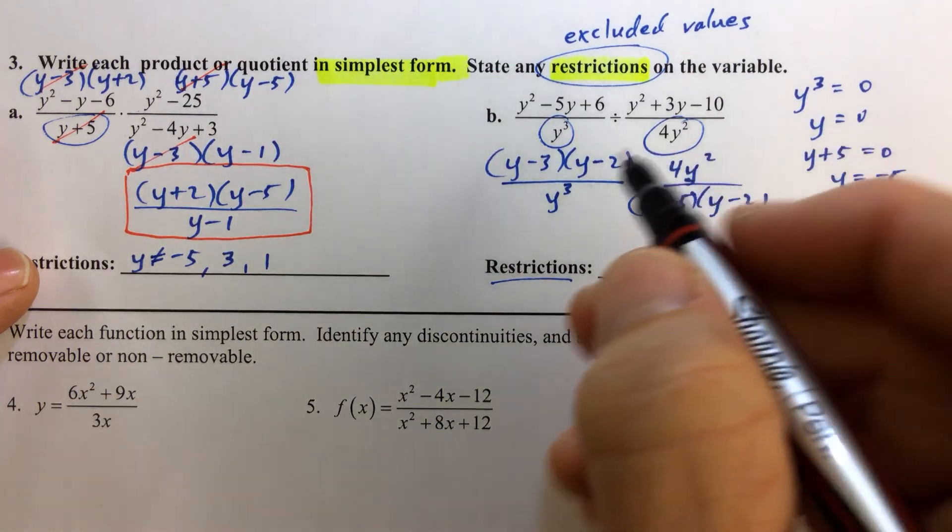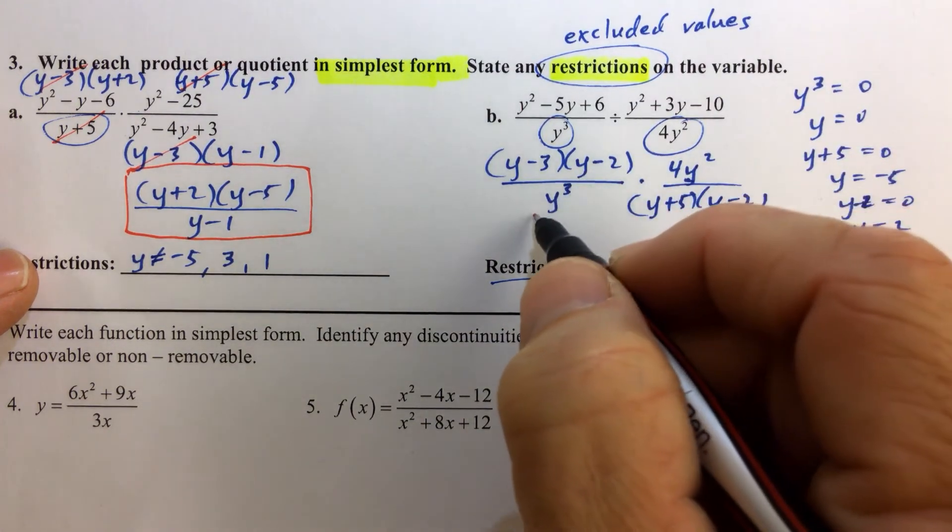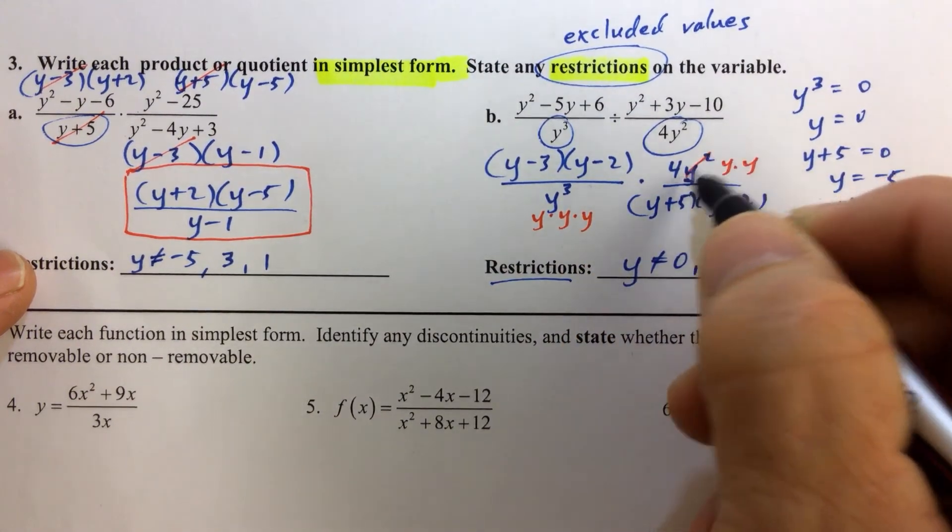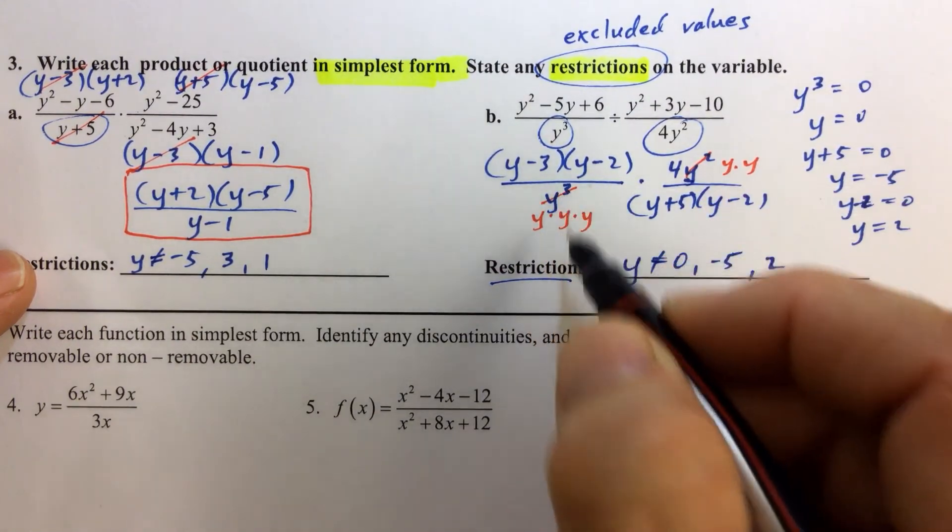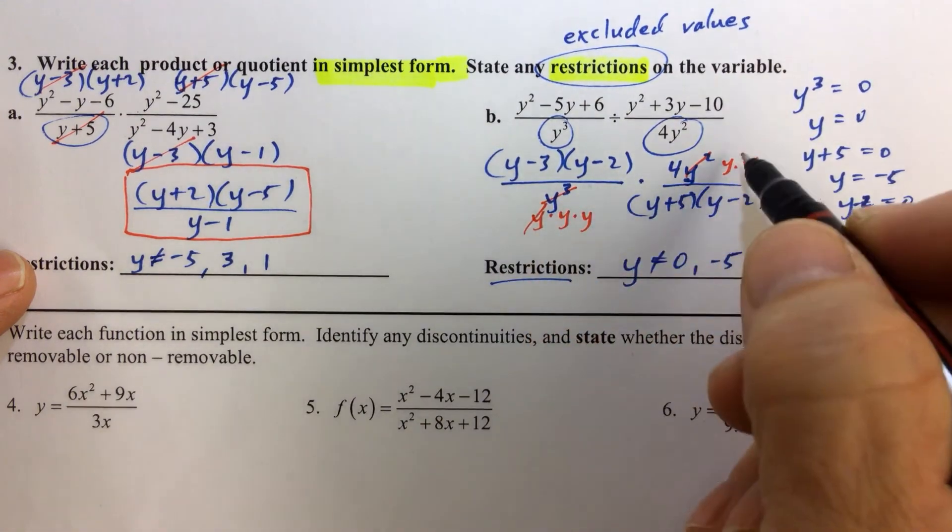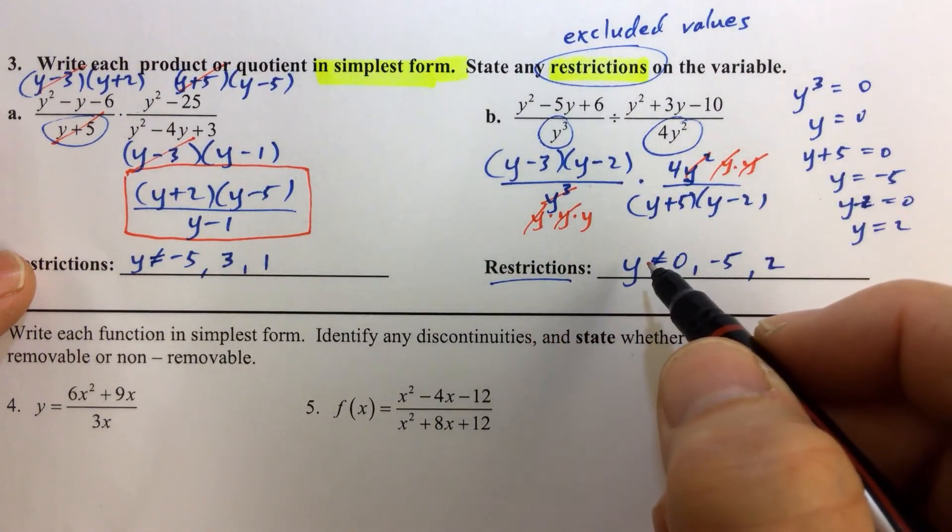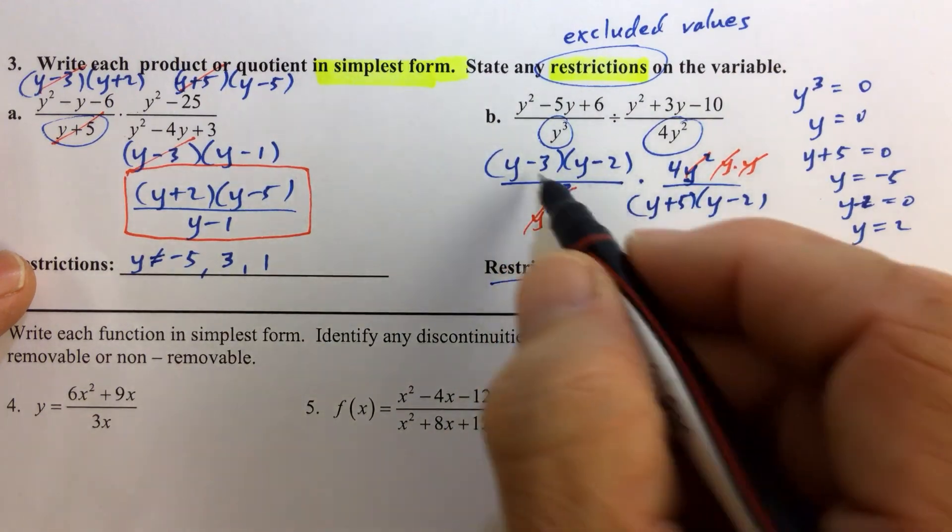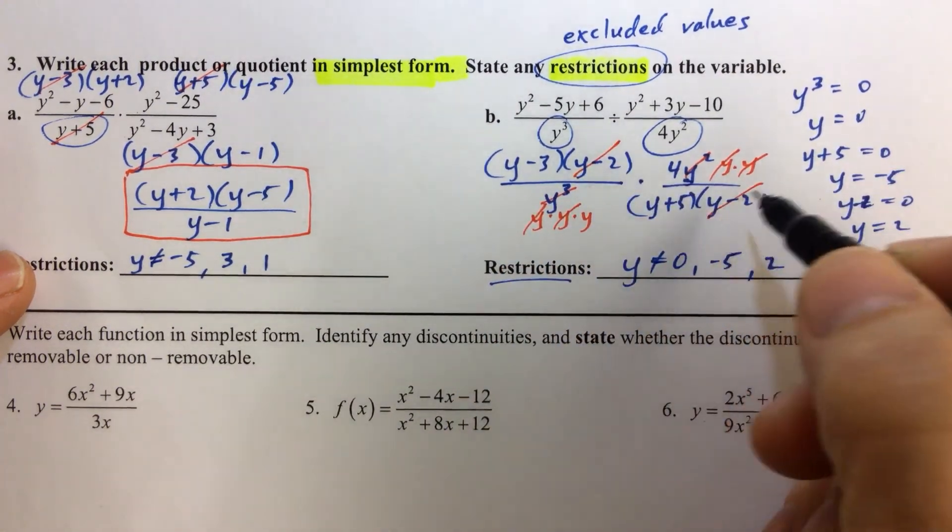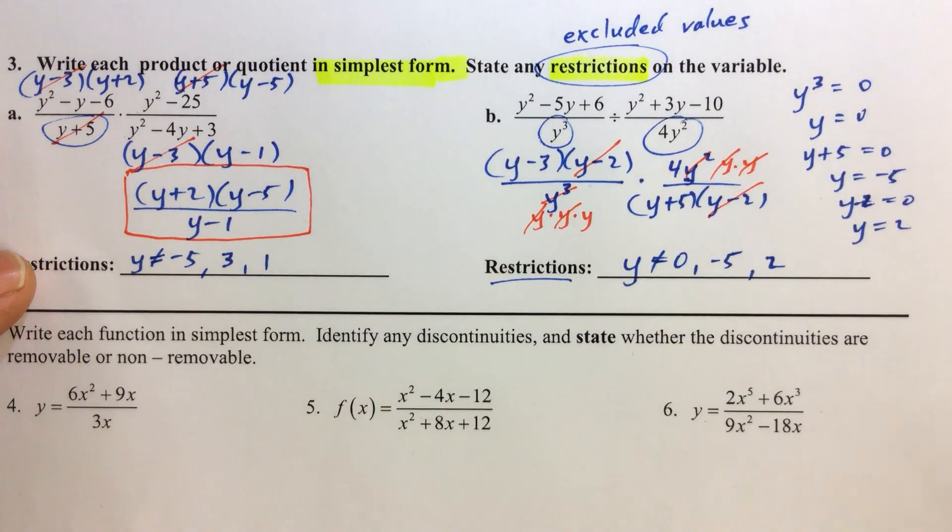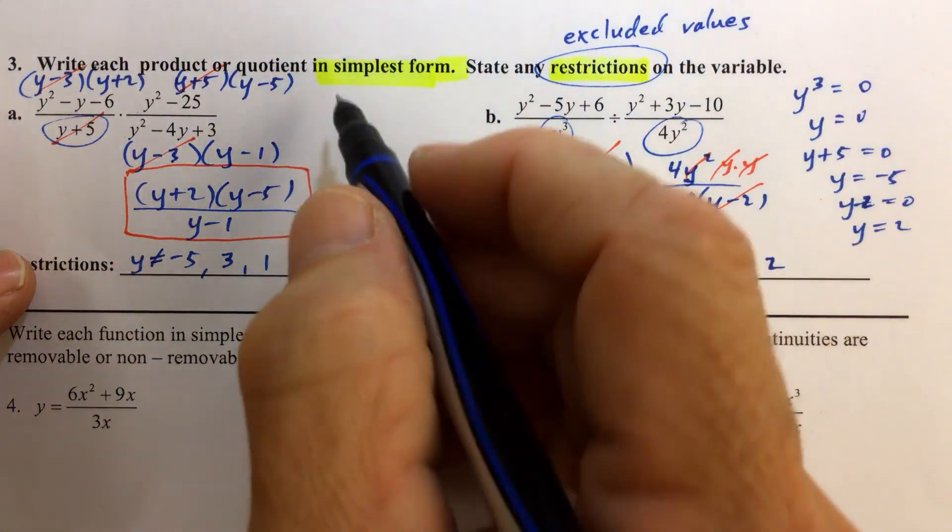Now it's time to cancel any like factors. I have y times y times y down here, and y times y up here. We can cancel one y with one y, another y with another y. We don't have a y minus 3 to cancel, but we do have a y minus 2 that we can cancel. I'm looking for some space to write the answer to this problem.